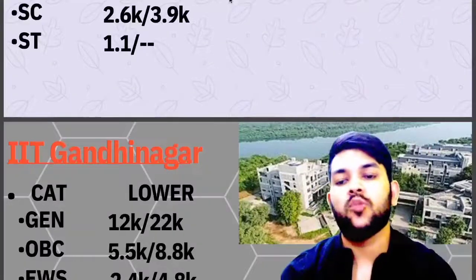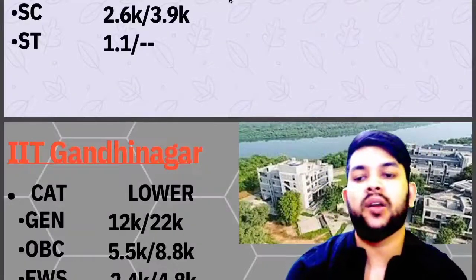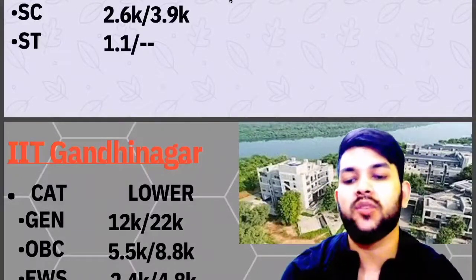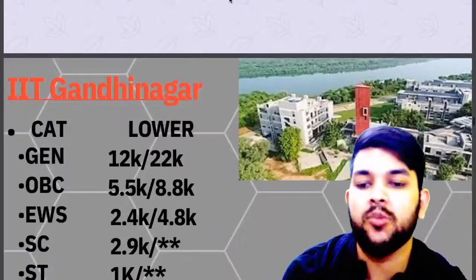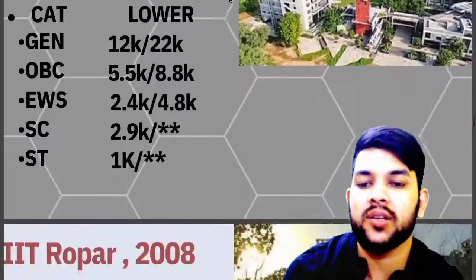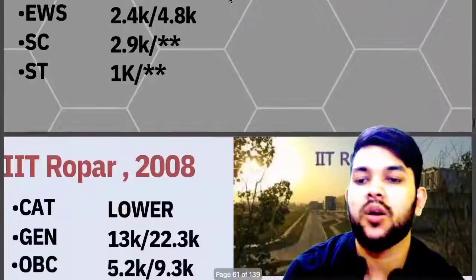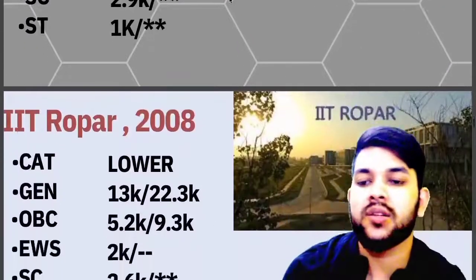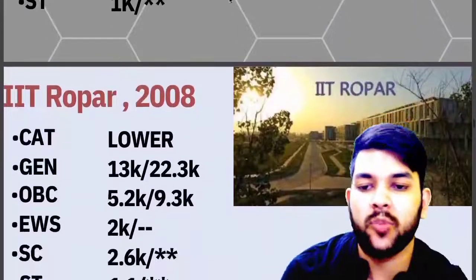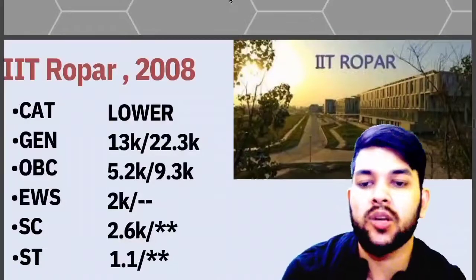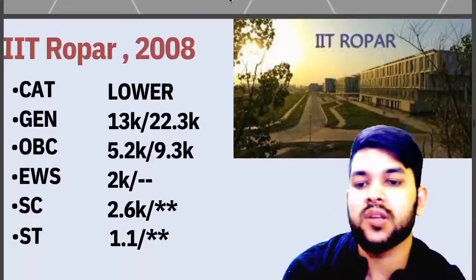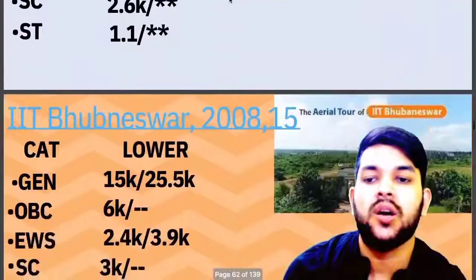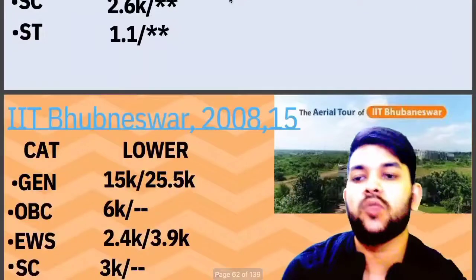For IIT Gandhinagar: General – 12,000; OBC – 5,500; EWS – 2,400; SC – 2,900; ST – 1,000. For IIT Ropar: General – 13,000; OBC – 5,200; EWS – 2,000; SC – 2,600; ST – 1,000.